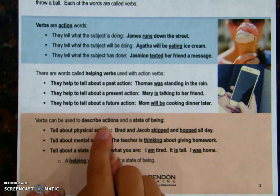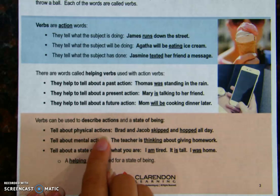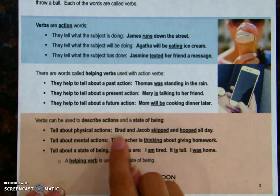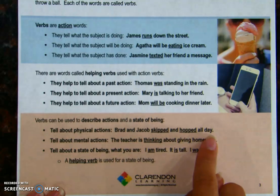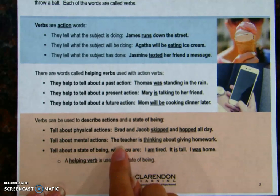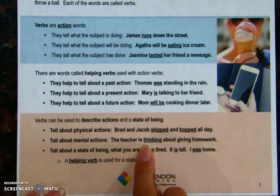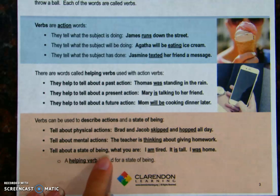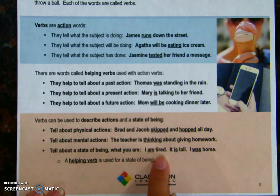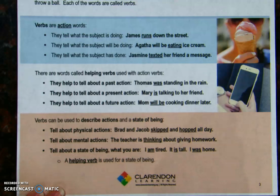Verbs can be used to describe actions and a state of being. They can tell about a physical action — those are things like what we started our lesson with: Brad and Jacob skipped and hopped all day. They tell about mental actions — things we don't actually see: the teacher is thinking about giving homework. And they tell about a state of being — what you are: I am tired, it is tall, I was home. A helping verb is used for a state of being, but we're not going to spend too much time on those.